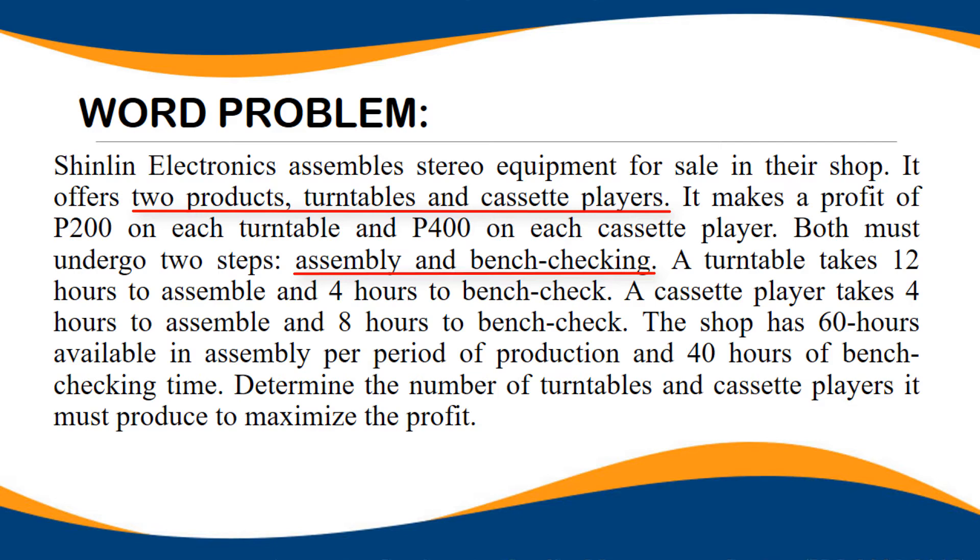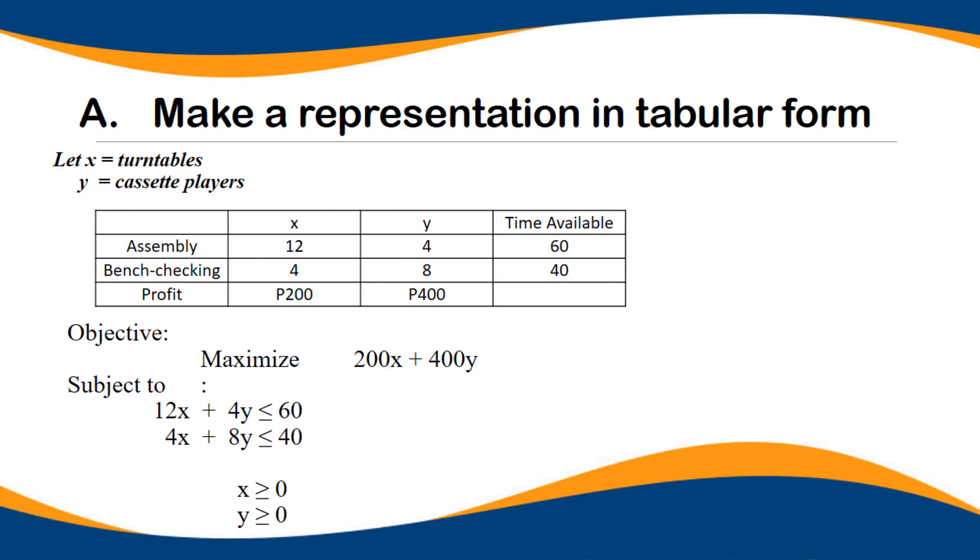Then, the shop has 60 hours available in assembly per period of production and 40 hours of bench checking time. Determine the number of turntables and cassette players it must produce to maximize the profit. When you see the word available, it means you cannot exceed 60 hours or 40 hours of production time. That is the limit.